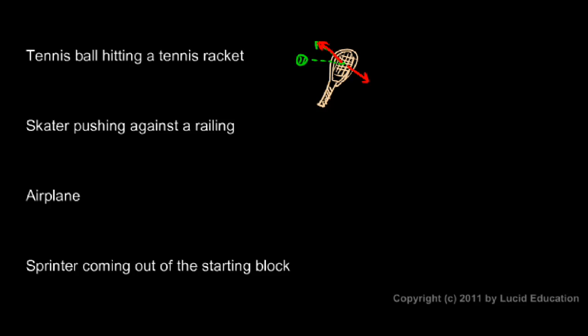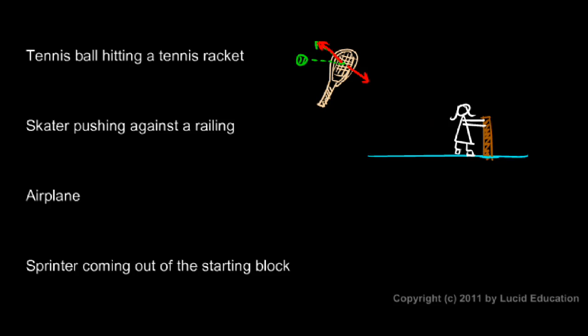Here's another example: imagine an ice skater pushing against a railing. Let's draw the ice, with the railing over the edge of the ice rink and an ice skater on skates with hands on the railing. If she pushes the railing, she ends up sliding backward in the opposite direction. Clearly there is a force on the railing — she pushes it to the right in our diagram. We also know there's a force to the left because she goes sliding in that direction, and that force is on her.